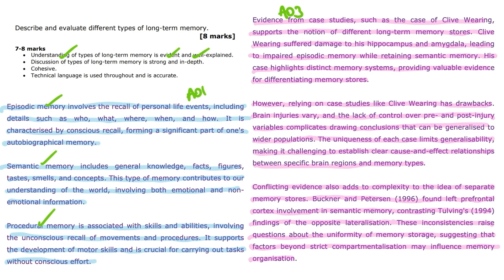For example, in the case of episodic memory, the inclusion of specific details like who, what, where, when, and how adds depth to the explanation.